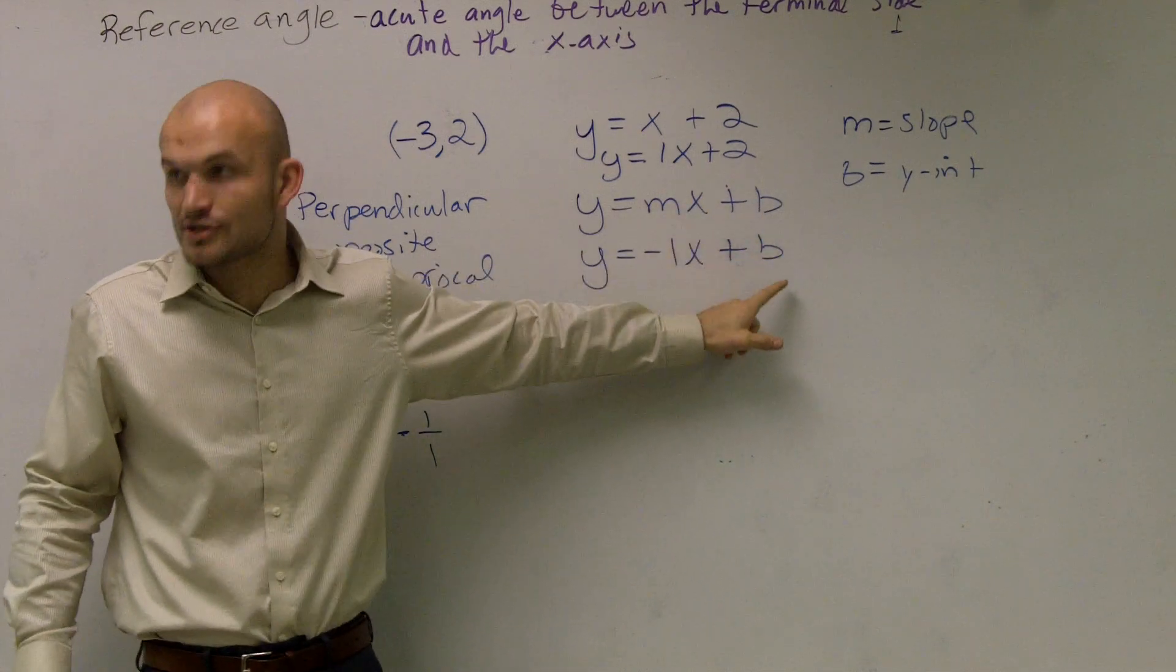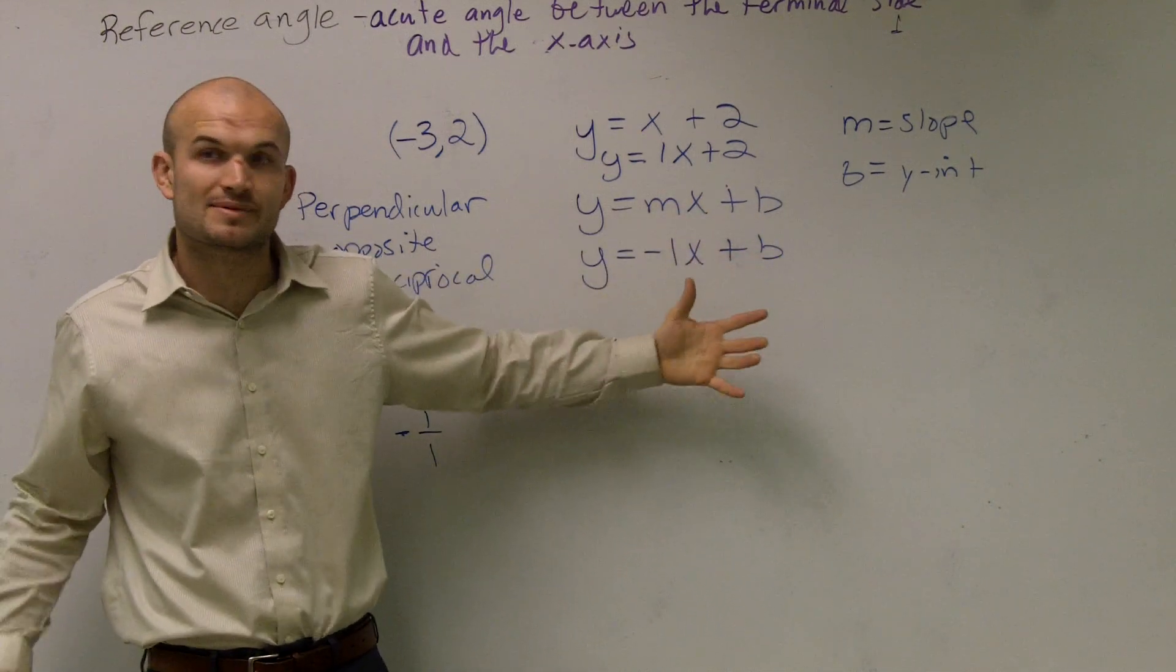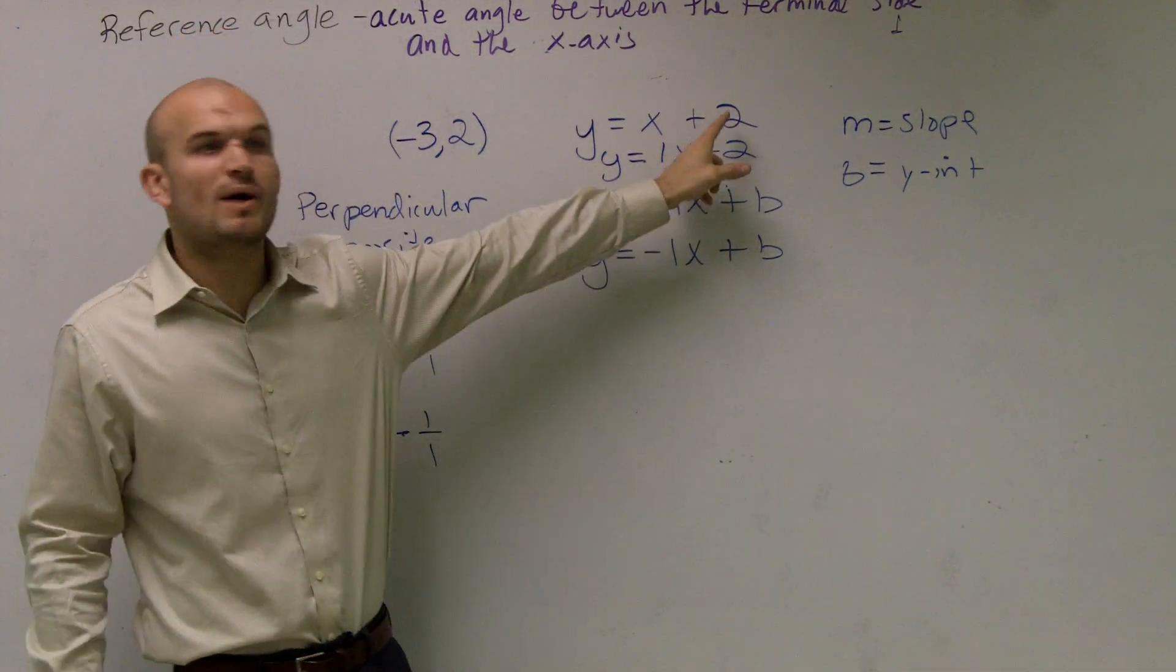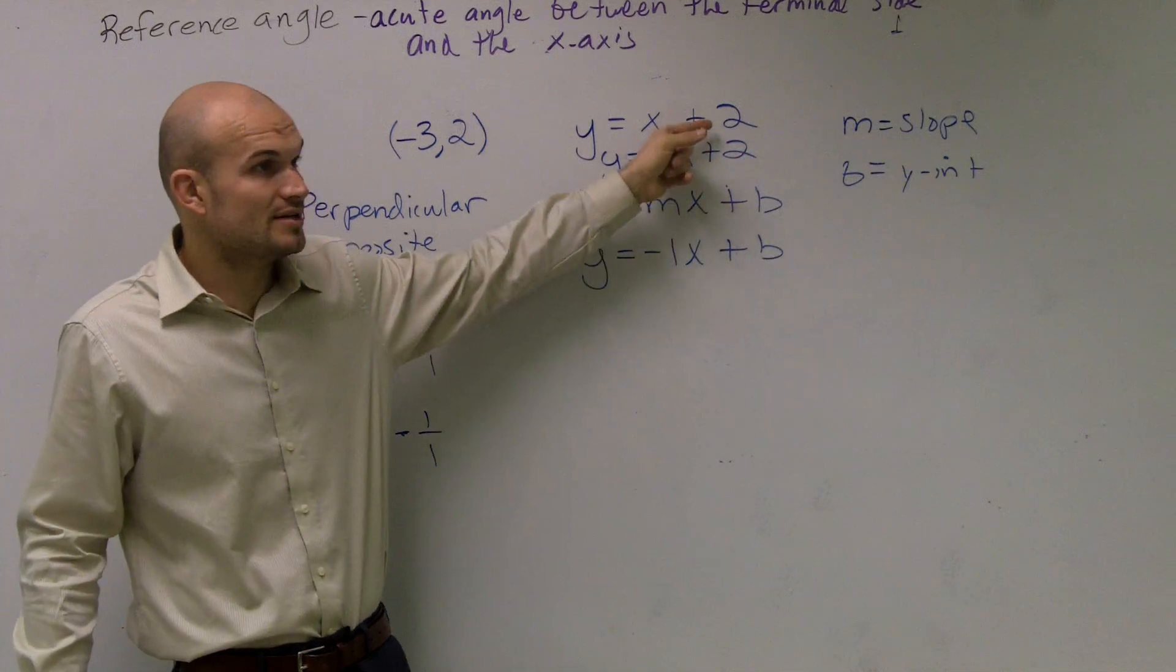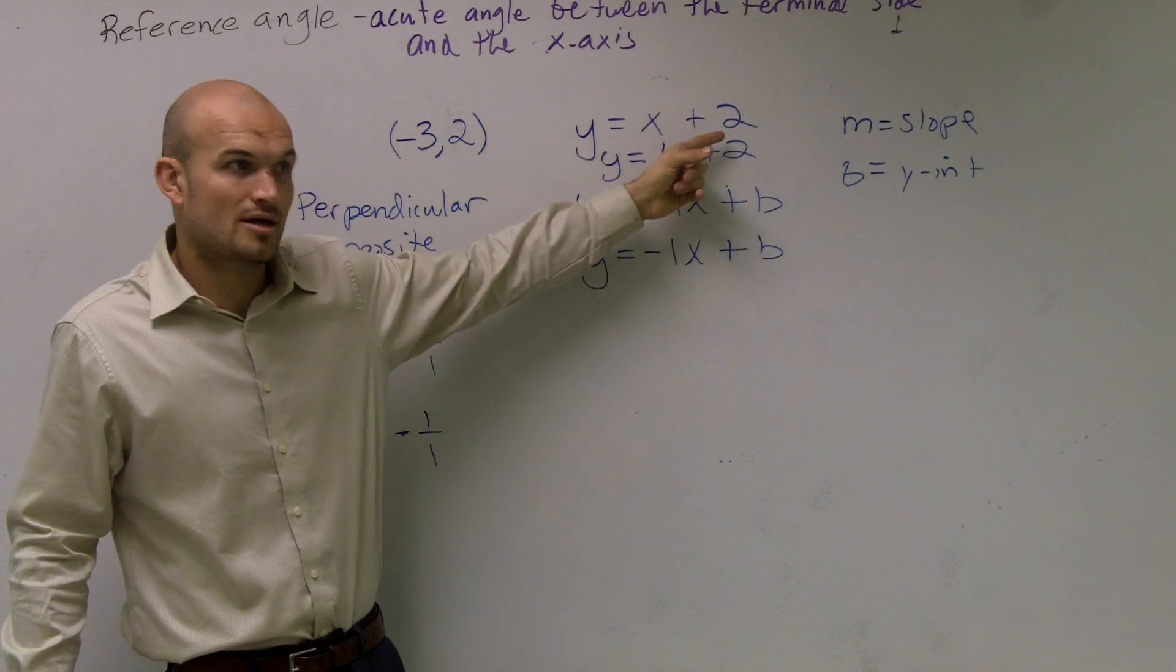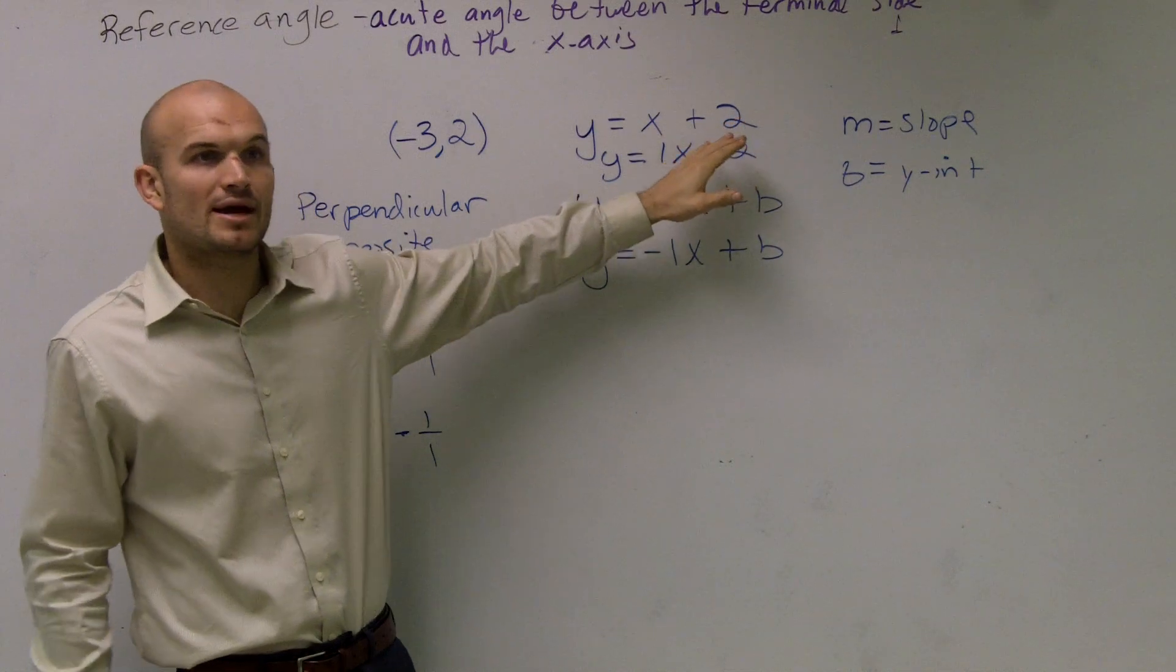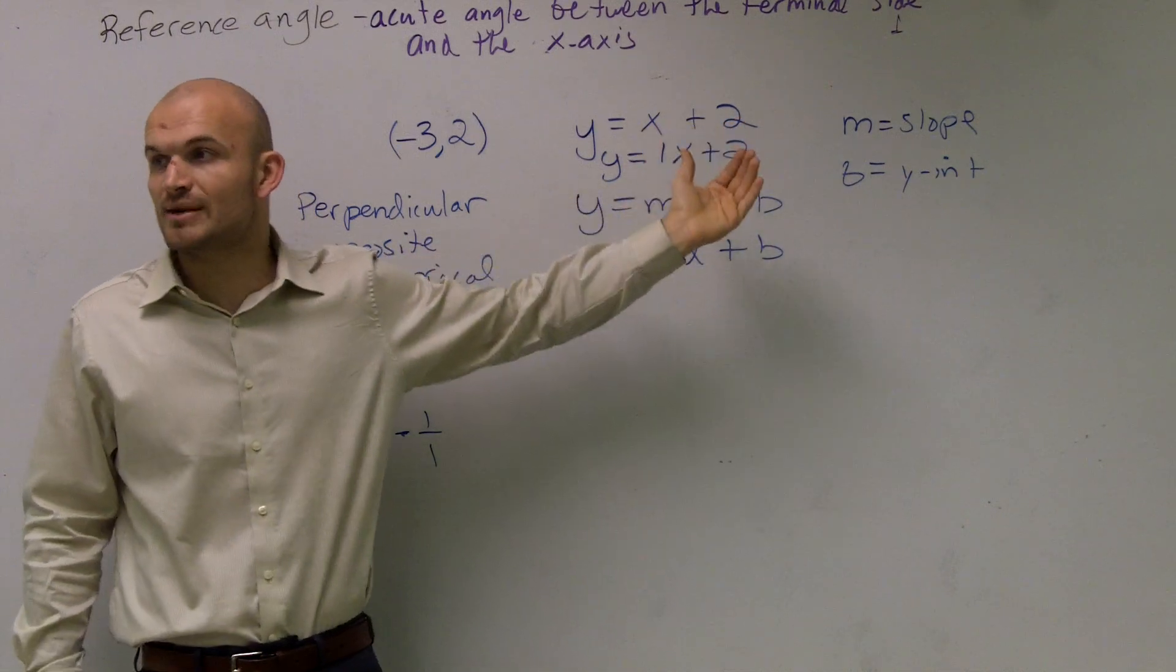Now we need to figure out what our y-intercept is. We still don't know what the y-intercept is. The biggest mistake that students want to do is they want to say your y-intercept is two. Well, for this equation, your y-intercept is two. But for a line perpendicular to it, it's not going to be the same y-intercept. It could be. Well, let's go and determine if it is.